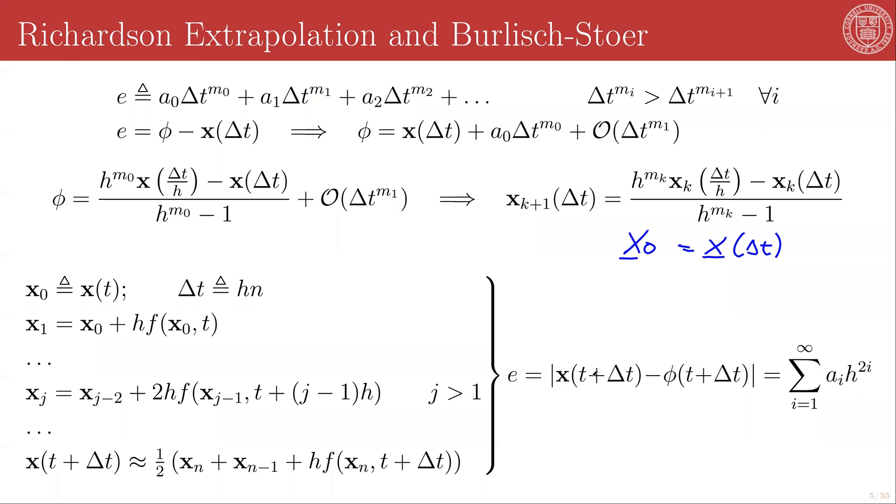The error for this method, the local truncation error, is given by x(t+Δt) - φ(t+Δt), which will equal the summation of a_i times h^{2i}. And you will notice that this only contains even powers of h.